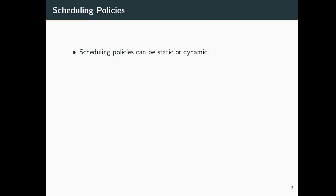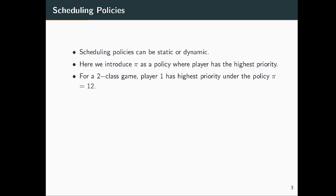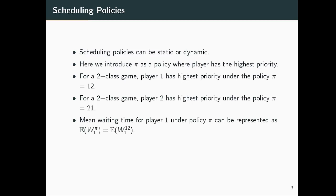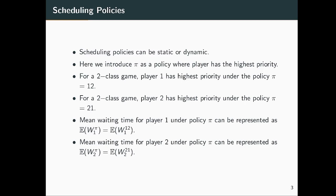Scheduling policies can be static or dynamic. Let pi be a scheduling policy where player i has the highest priority. For a 2-class game, player 1 has highest priority under policy pi(1,2), and for player 2 it is pi(2,1). The mean waiting time for player 1 under policy pi is the expected waiting time for player 1 under policy (1,2), and for player 2 it is the expected waiting time under policy (2,1).